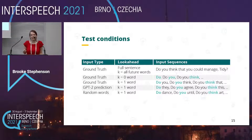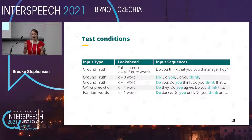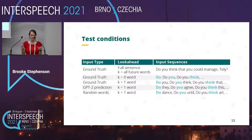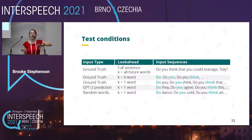To evaluate the quality of our model, we compare several test conditions. We use the full sentence input as our reference audio, and then compare it to a k equals zero condition, where k is our look-ahead parameter — the number of future words the model sees when producing speech. We also have the ground truth k equals one, our proposed GPT-2 predictions, and as a control, a random future word. When synthesizing the nth word, the model can see all past words, the current word, and k future words.